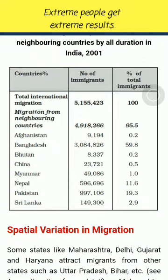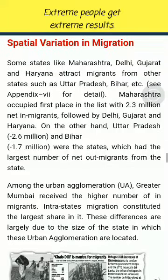Spatial Variation in Migration. Some states like Maharashtra, Delhi, Gujarat and Haryana attract migrants from other states such as Uttar Pradesh and Bihar. Maharashtra occupied first place in the list with 2.3 million net in-migrants, followed by Delhi, Gujarat and Haryana. On the other hand, Uttar Pradesh (minus 2.6 million) and Bihar (minus 1.7 million) were the states with the largest number of net out-migrants. Among urban agglomerations, Greater Mumbai received the highest number of in-migrants, with intrastate migration constituting the largest share.